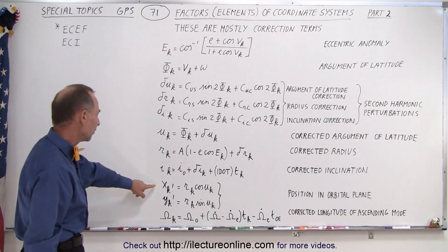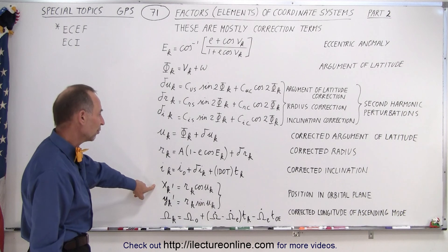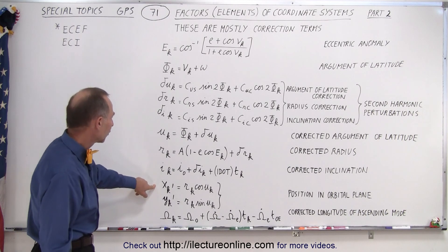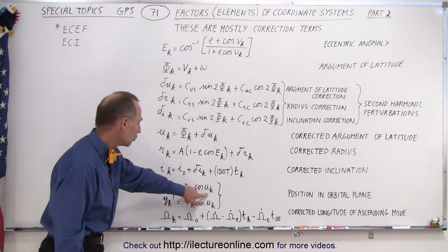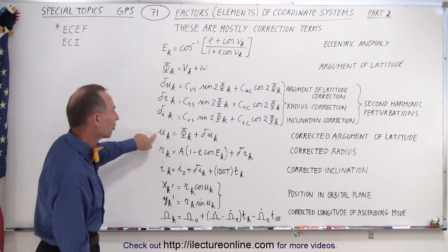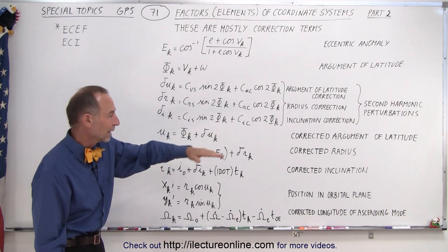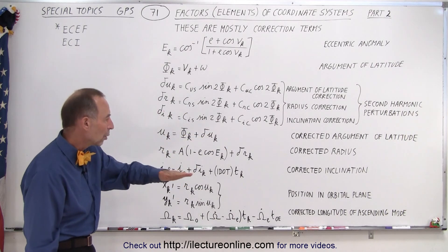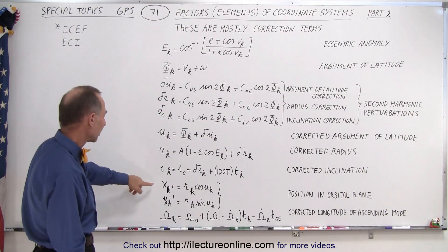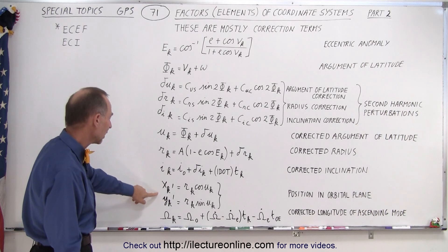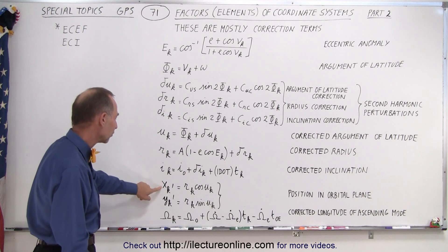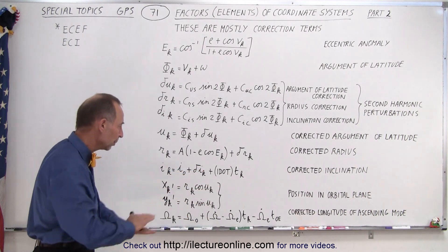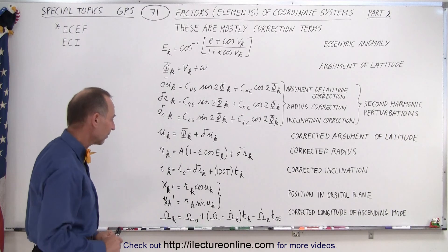We also have adjustments for the position in the orbital plane. This is dependent on U sub K, which is the corrected argument of latitude. So when you know exactly where the satellite is, you can then find the exact parameters for the x and y coordinates in the orbital plane of the satellite.